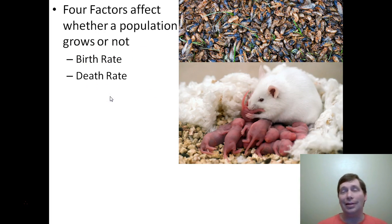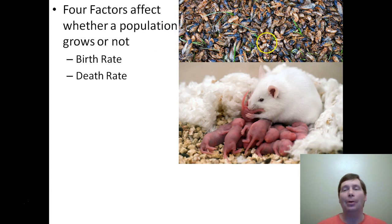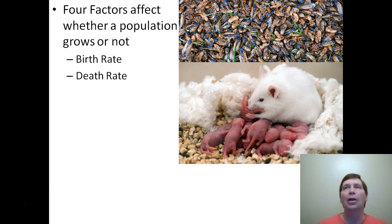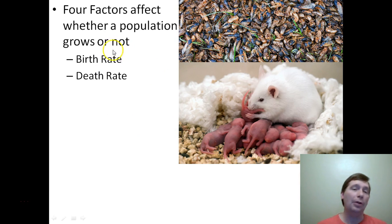Cicadas are an insect that lay in the ground for 17 years; every 17 years they come out, quickly mate, lay their eggs, and then die. They have a massive death rate — bunches die all at once — so the cicada population spikes and then drops right back down. To see if a population is going up or down, you compare birth rate and death rate. But that's not the whole story.